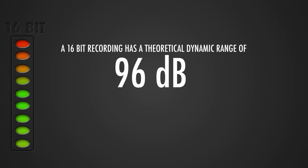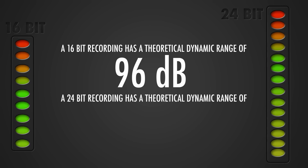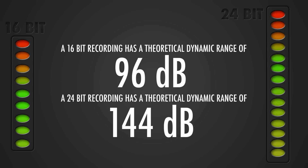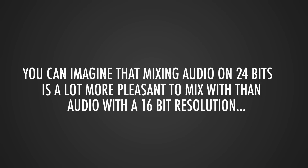A 16-bit recording has a theoretical dynamic range of 96 dB, whereas 24-bit audio has a theoretical dynamic range of 144 dB. Mixing with audio that has 24-bit resolution is much easier and more pleasant compared to 16-bit, since we literally have more values on the amplitude axis.